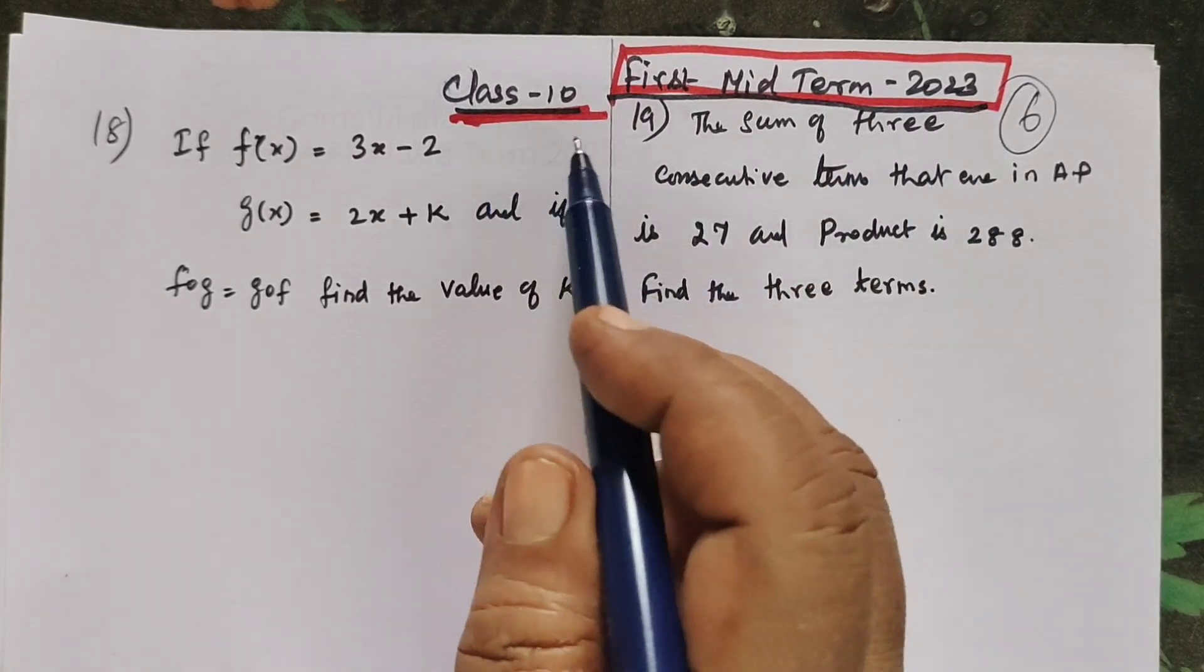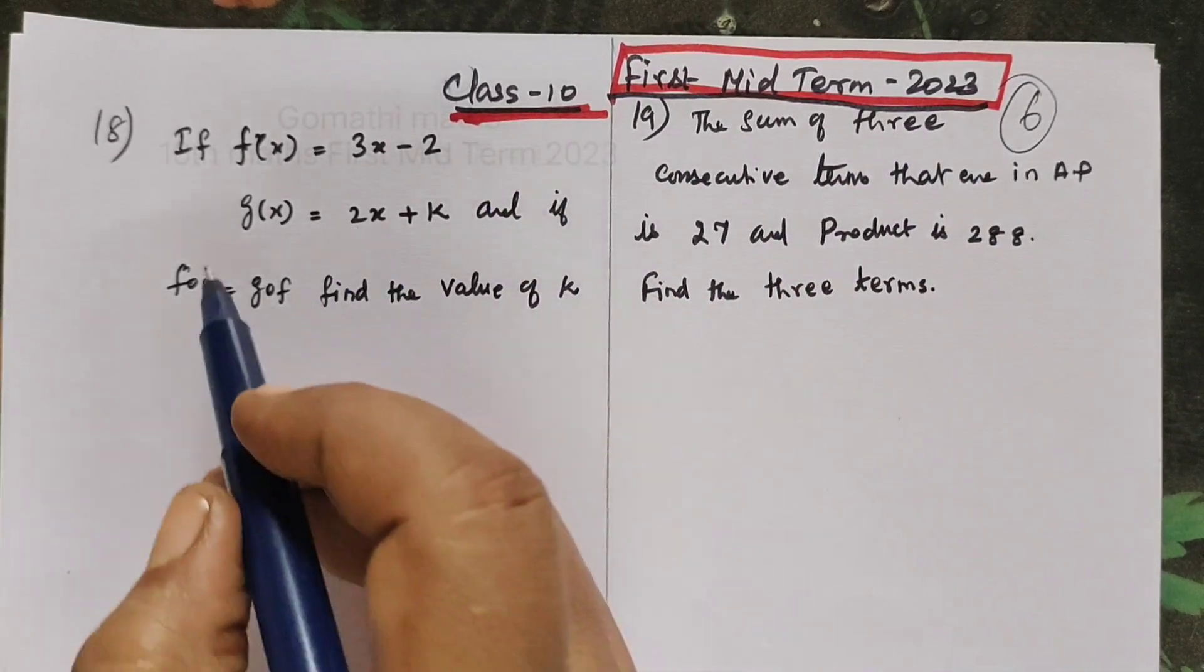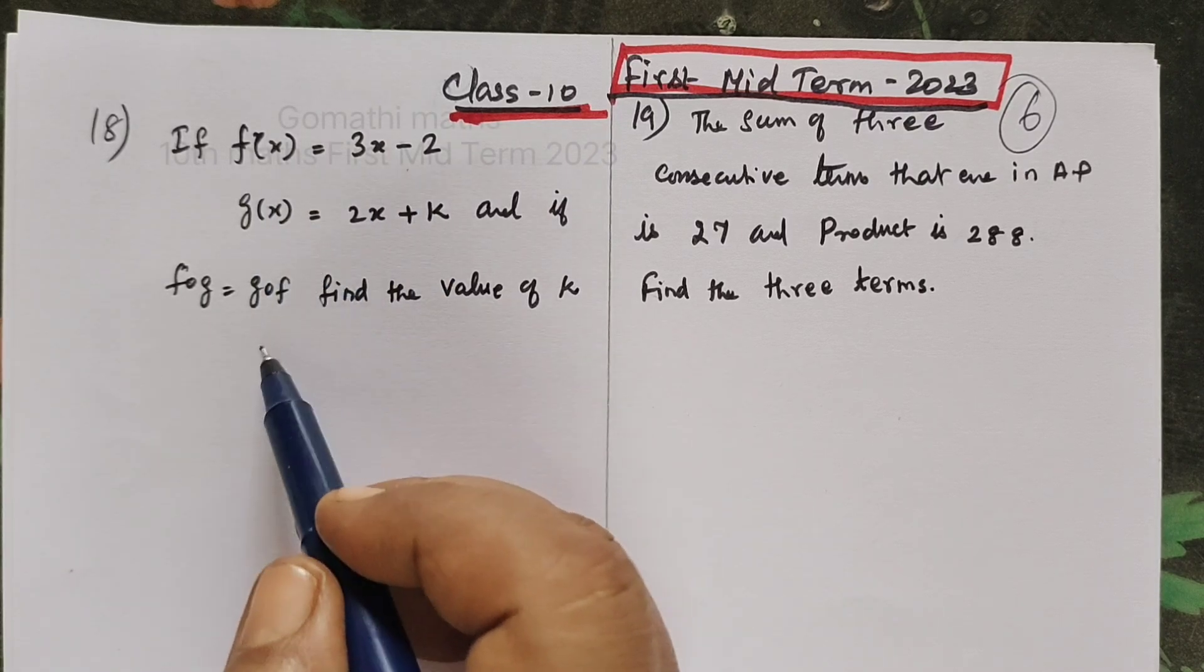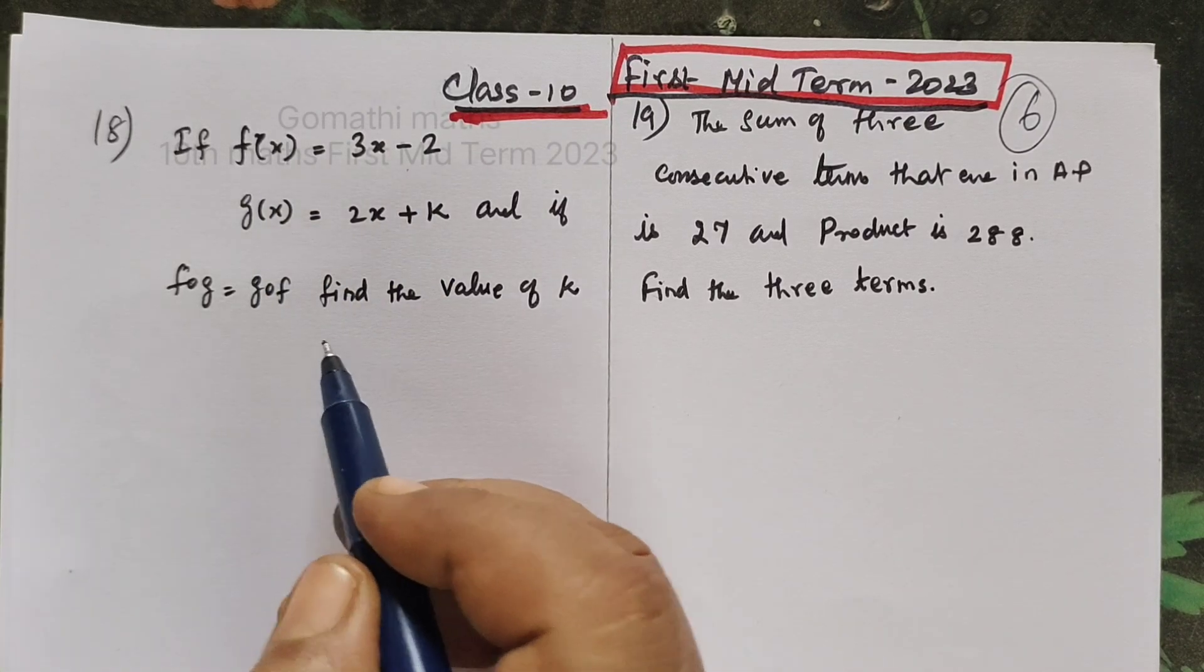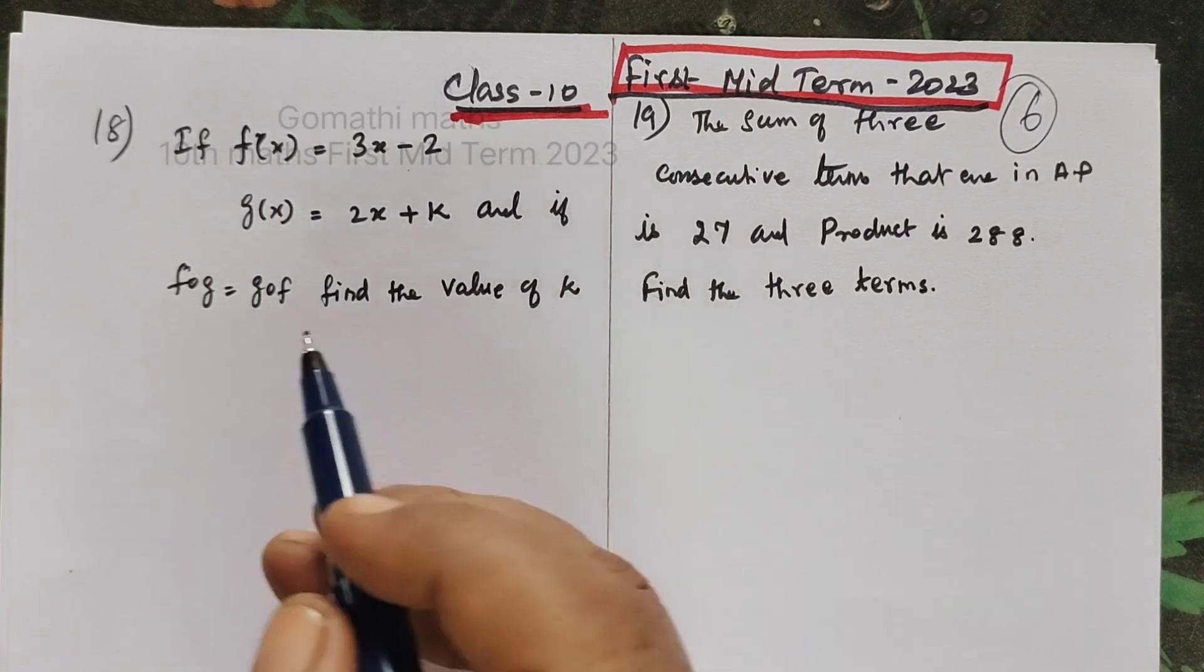First Mid Term 2023, 10th. If f(x) given, g(x) given, f∘g and g∘f equal. Find the value of k.